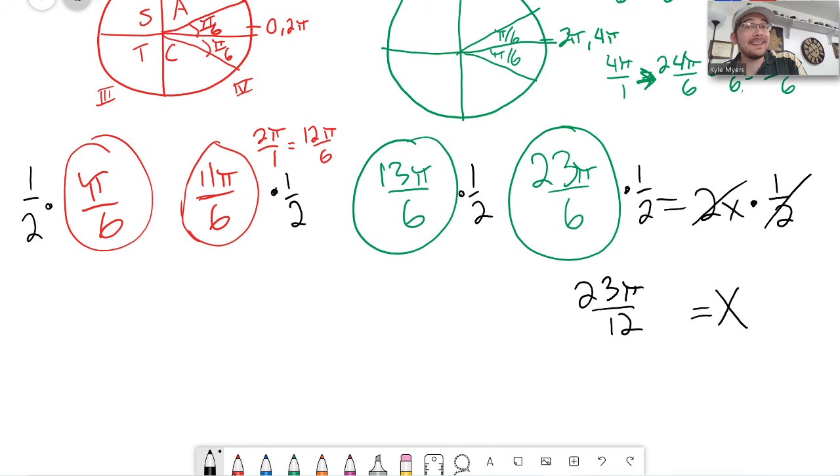This would be 13π over 12. This over here would be 11π over 12, and this over here would be π over 12.